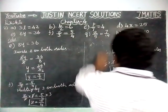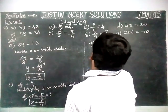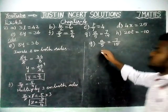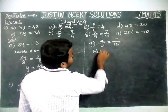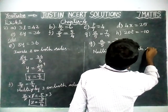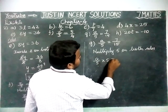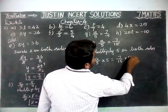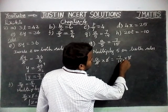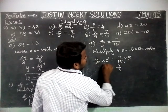Next, part G. A by 5 is equal to 7 by 15. Here, we have to cancel the 5, so we are going to multiply 5 on both sides. A divided by 5 into 5 is equal to 7 by 15 into 5. The 5s get cancelled. We can simplify: 1 five is 5, 3 fives are 15. So A is equal to 7 divided by 3. The value of A is equal to 7 by 3.